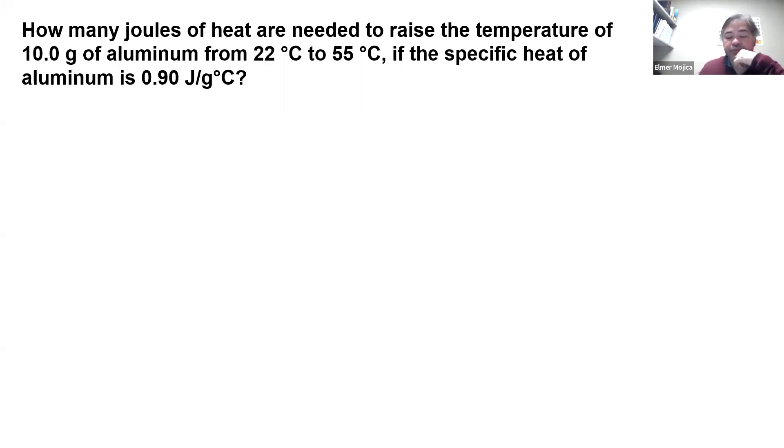Let's go on specific heat problems. How many joules of heat are needed to raise the temperature of 10 grams of aluminum from 22 degrees Celsius to 55 degrees Celsius if the specific heat of the aluminum is 0.90 joules per gram per Celsius.